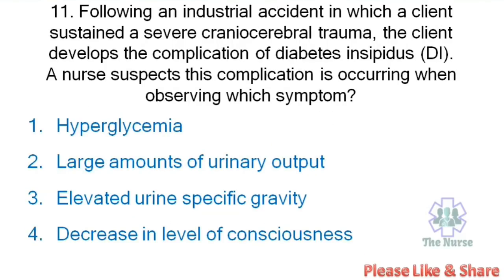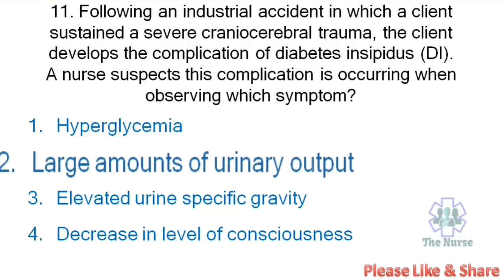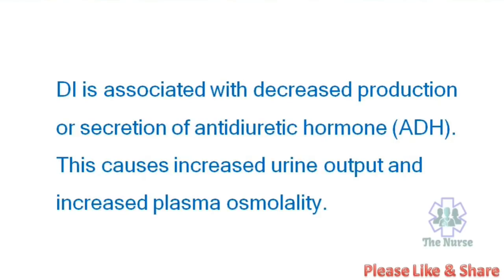Next question: Following an industrial accident in which a client sustained severe craniocerebral trauma, the client develops complication of diabetes insipidus. A nurse suspects this complication when observing which symptom? Options: Hyperglycemia, large amount of urinary output, elevated urinary specific gravity, decrease in level of consciousness. Correct answer: Large amount of urine output, i.e. polyuria. Diabetes insipidus is associated with decreased production or secretion of antidiuretic hormone, which causes increased urine output and increased plasma osmolality.